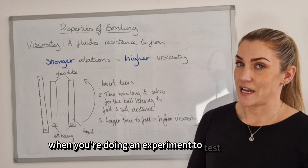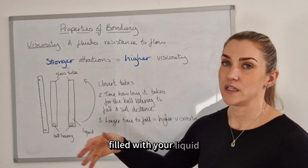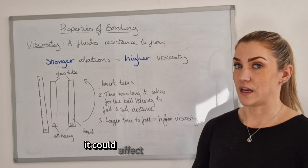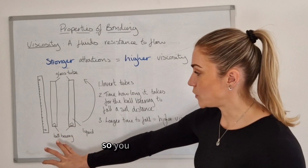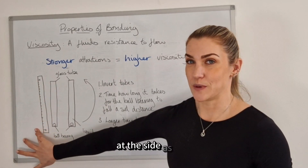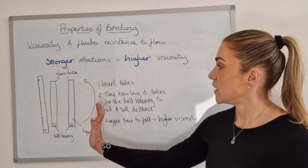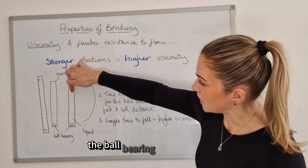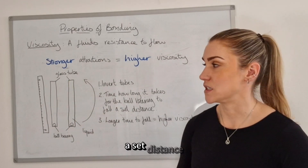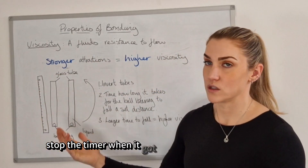When doing an experiment to test viscosity, you'll have some glass tubing filled with your liquid — ideally an accurate volume, since a different volume could affect the result. You put a ball bearing in the glass tube with your liquid and have a meter stick at the side to track an accurate distance. The tube is inverted and the ball bearing starts to fall; you time how long it takes to fall a set distance, starting and stopping the timer at defined points on the meter stick.